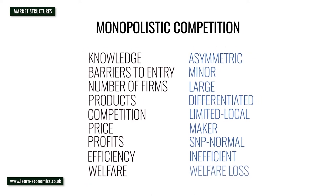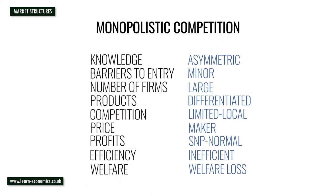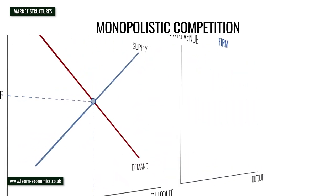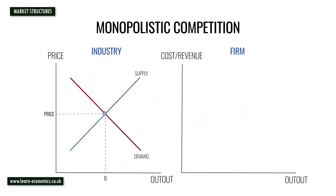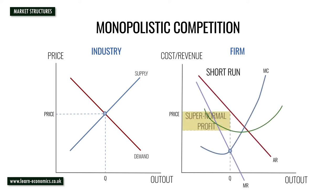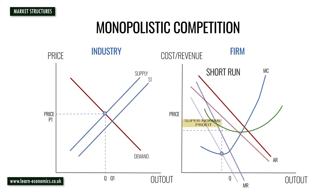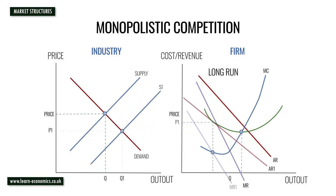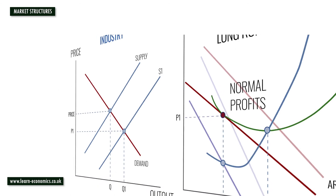Firms are not allocatively or productively efficient in the short or long run, and there is a welfare loss as price is greater than marginal cost. In the long run, new firms are attracted by supernormal profits, increasing competition. Some consumers switch to new entrants, demand for existing firms falls, and the marginal firm operates where marginal revenue equals marginal cost, making only normal profits at price P1.